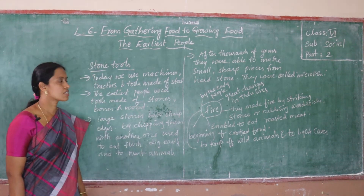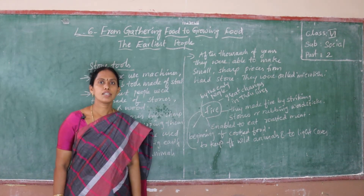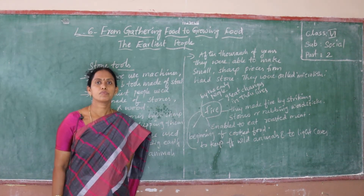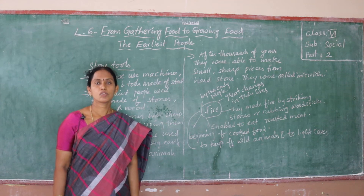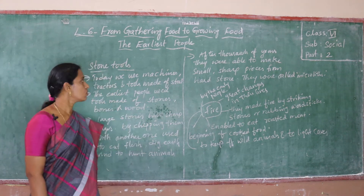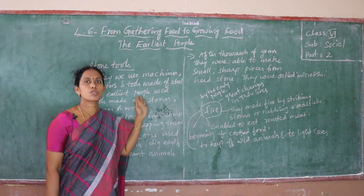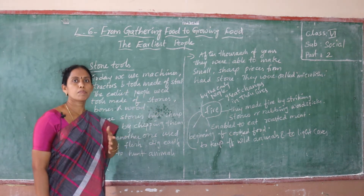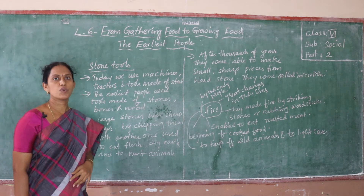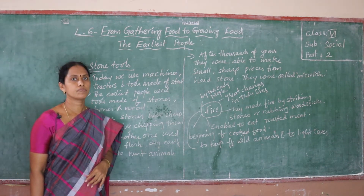Last class we discussed about earliest people, how they gathered food and how they depended on hunting. Now in this class we are going to learn about stone tools — which type of tools they used for hunting and for gathering food.